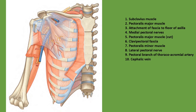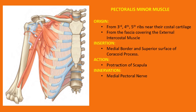When the pectoralis major muscle is removed, the clavipectoral fascia becomes visible beneath it, as seen in the diagram. The cephalic vein can also be seen piercing the clavipectoral fascia. The second muscle is the pectoralis minor muscle. As the name suggests, it is a smaller muscle of the pectoral region. It arises from the third, fourth, and fifth ribs near their costal cartilages and the fascia covering the external intercostal muscles. Its insertion is on the medial border and superior surface of the coracoid process. Its action is to protract the scapula, and it is innervated by the medial pectoral nerve.